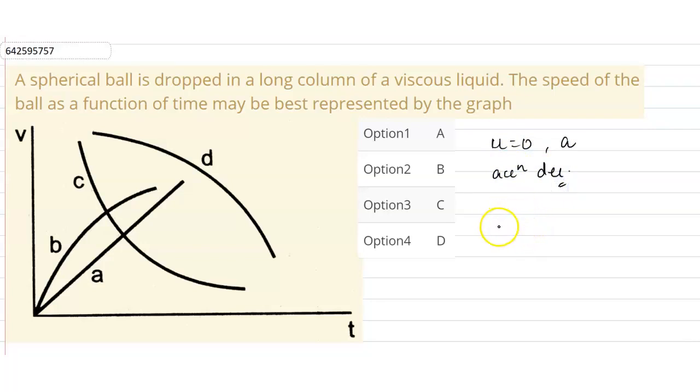In the speed-time graph, the speed is zero at time equals zero only in graph a and b. So option c and option d, that is graph c and d, are incorrect options. We have to choose from a and b.